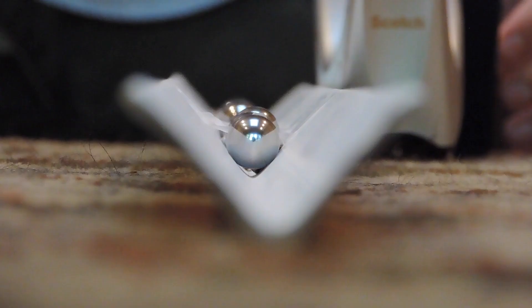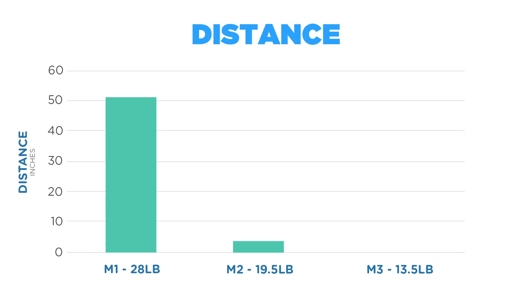For the second set of magnets, the distance and speed drastically decreased. After three tests, the average distance was 8.6 inches or 0.21 meters. The speed was a mere 0.19 meters per second.